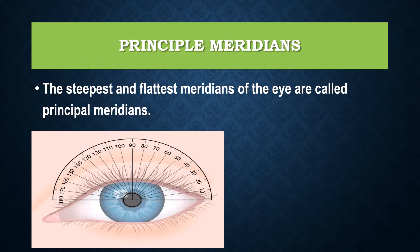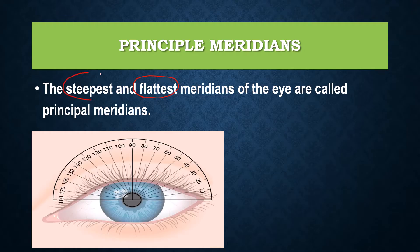So what is meant by the principal meridians? In a spherical eye all the meridians have equal power. However, in an astigmatic eye, out of all the meridians, we choose two: one which has the maximum curvature, called the steepest meridian, and one which has the least curvature, called the flattest meridian. These two — the steepest and the flattest — are known as the principal meridians.